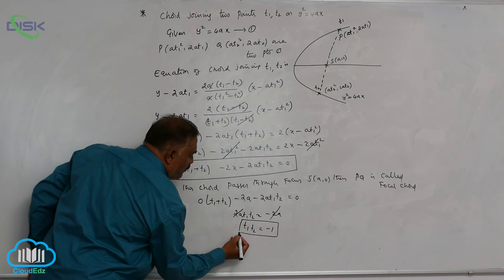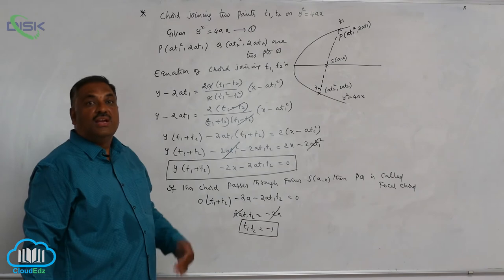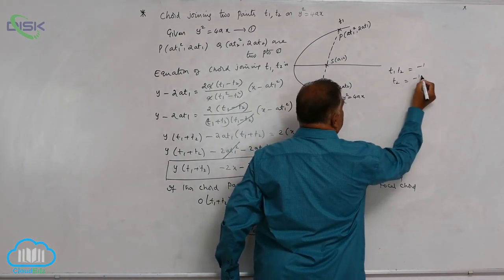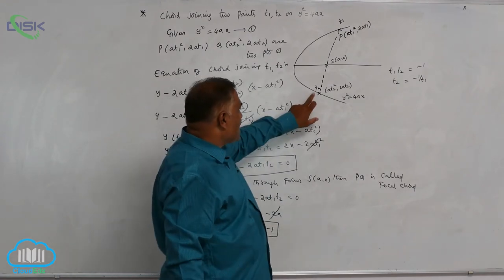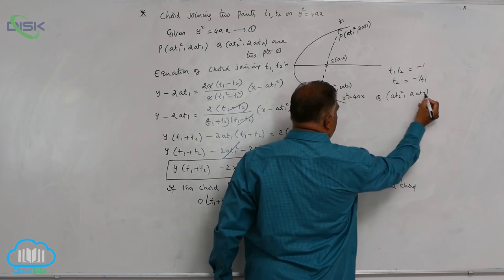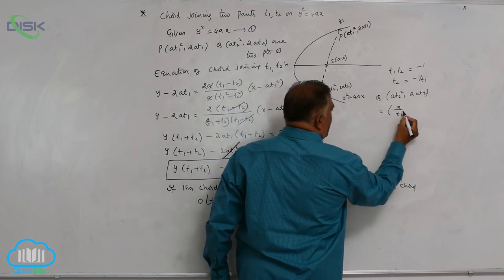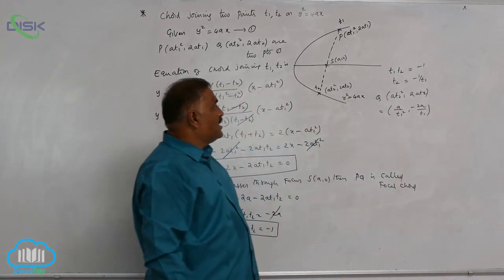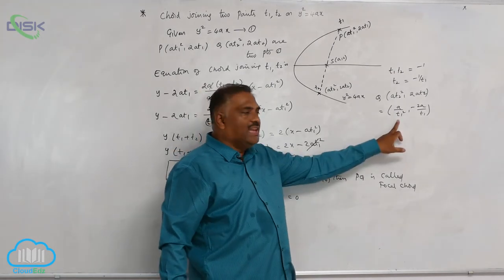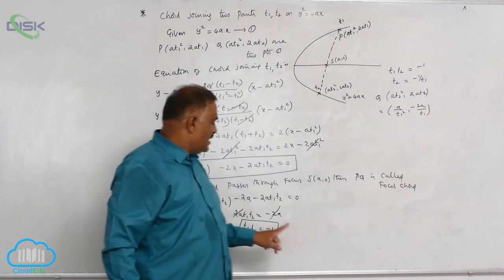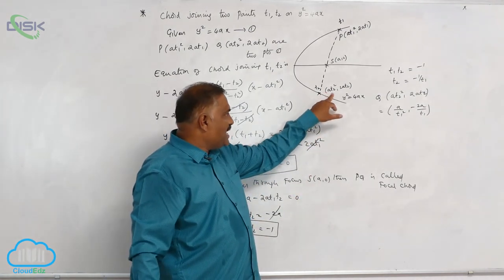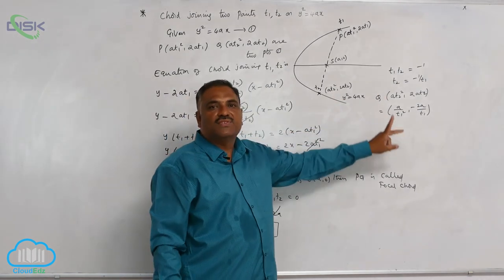When t1·t2 = −1, we have t2 = −1/t1. This means we can express the second endpoint Q in terms of t1: Q = (at2², 2at2) becomes (a/t1², −2a/t1). So if (at1², 2at1) is one end of the focal chord, the other end is (a/t1², −2a/t1). We substitute t2 = −1/t1 into (at2², 2at2) to express the second endpoint as a single parameter t1.